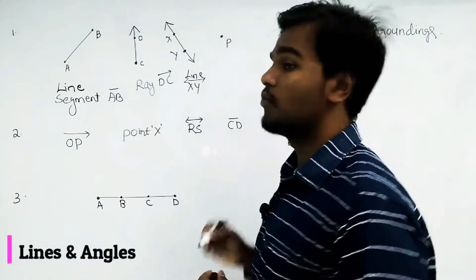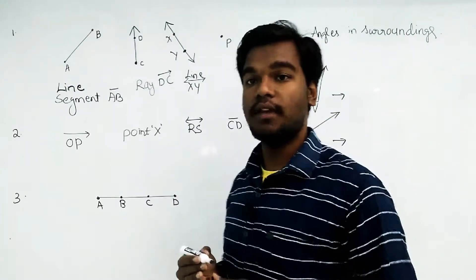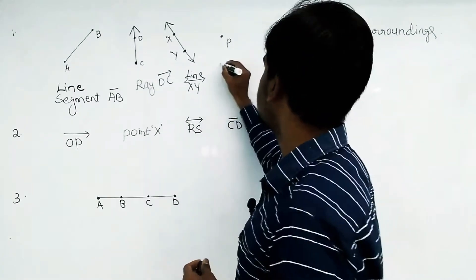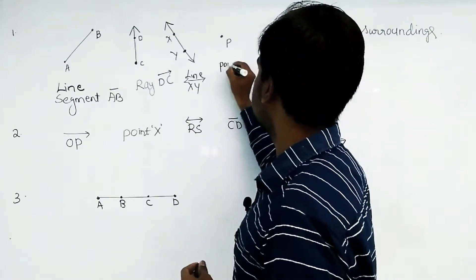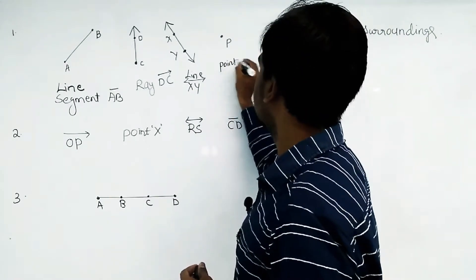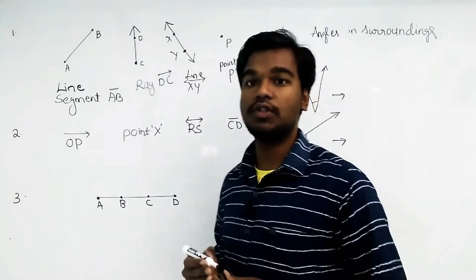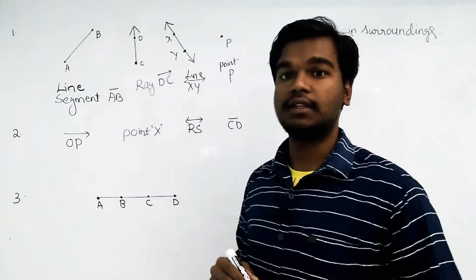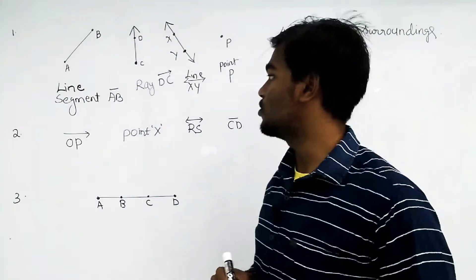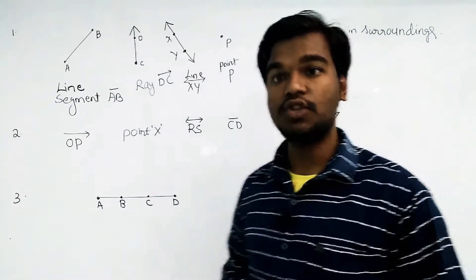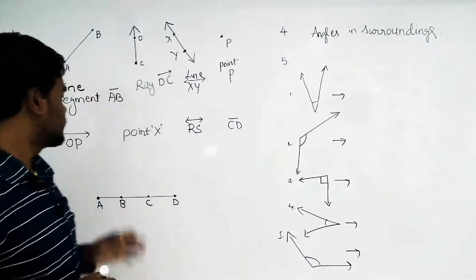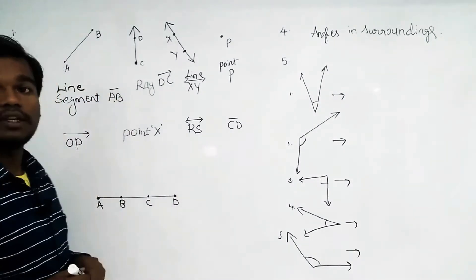A point — we can call it point P — is represented simply as P. That is the solution for the first question, and we will go to the second question.